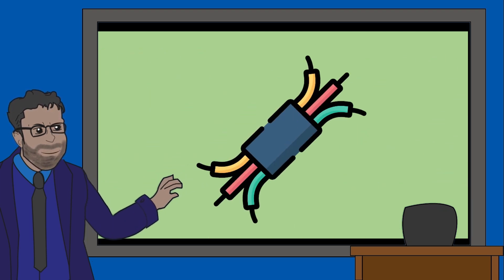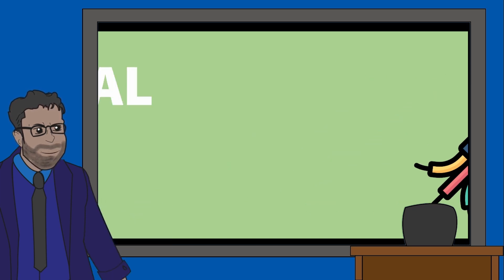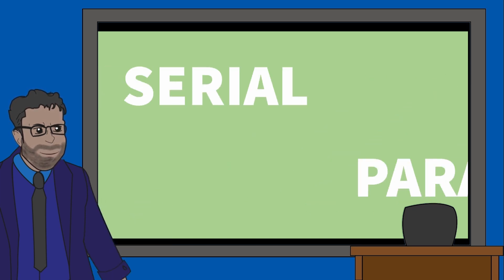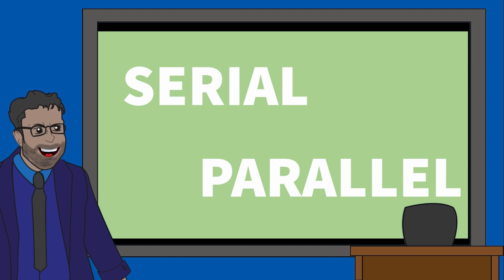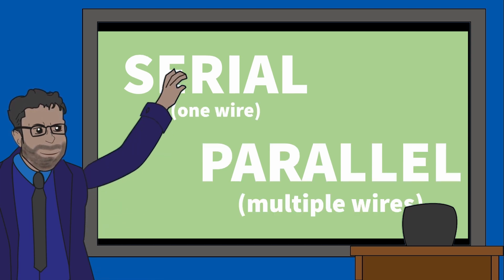Let's look at the number of wires. There are two methods that describe the number of wires: serial and parallel. Serial data transmission involves just one wire, whereas parallel involves multiple wires.